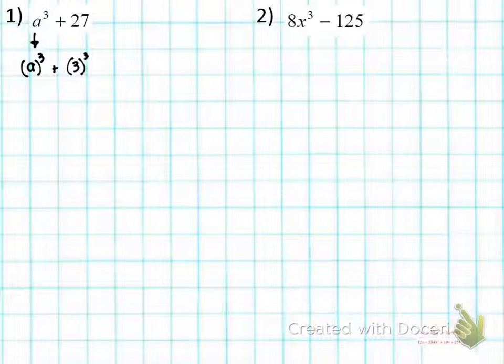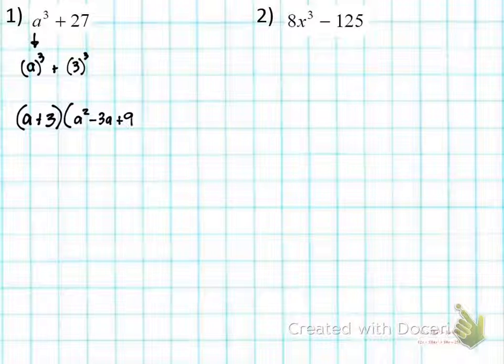And then we got minus ab, so I have to put a minus sign there. a times b in this case is going to be a times 3, which is 3a. And then I'm going to have to do plus b², our b here is 3, so 3² is 9, so we're going to be plus 9. And that's it, and that's your answer, number 1. That's how we factor it.